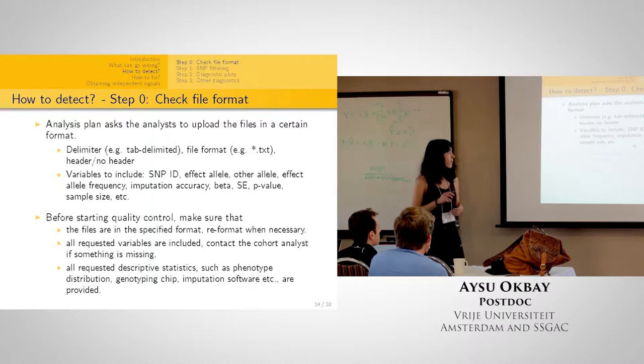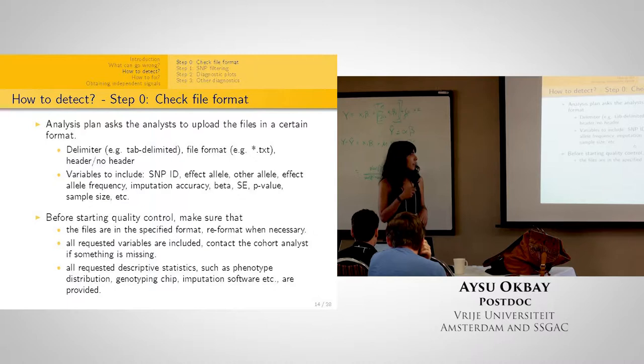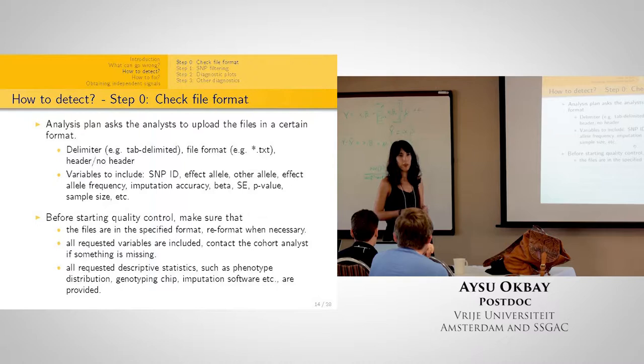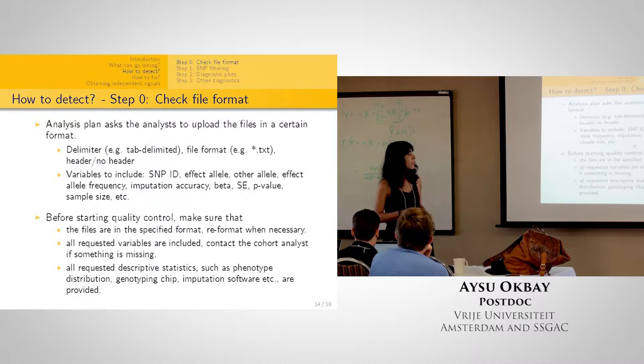Before starting quality control, as a first step, make sure all requested variables are actually present — often they're not, as people forget to upload imputation accuracy or other variables. You also need to make sure files are in the correct format with the correct delimiters, and that all descriptive statistics have been provided, such as phenotype distribution, which genotyping chip was used, and which imputation software was used, since these affect subsequent QC steps.